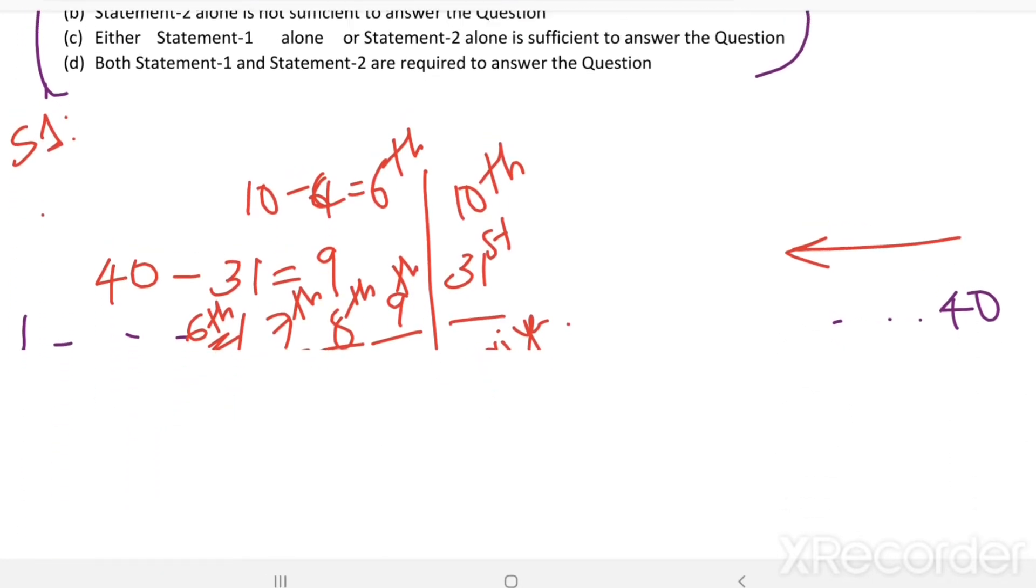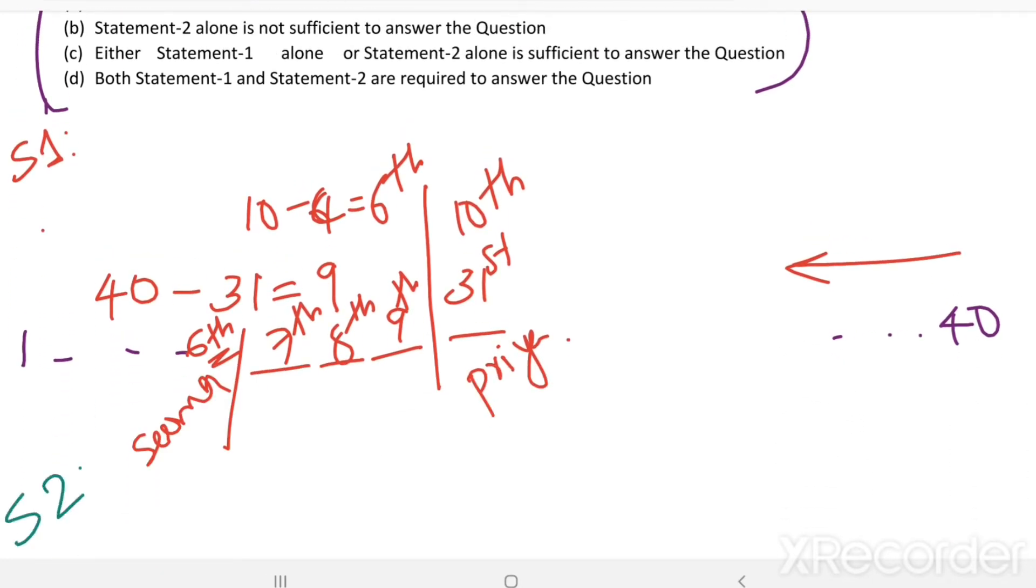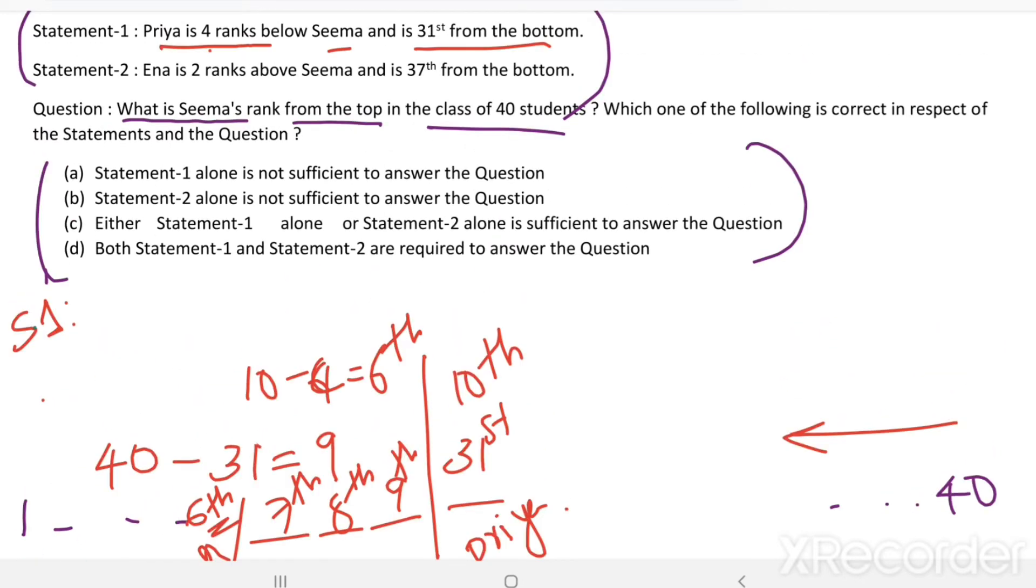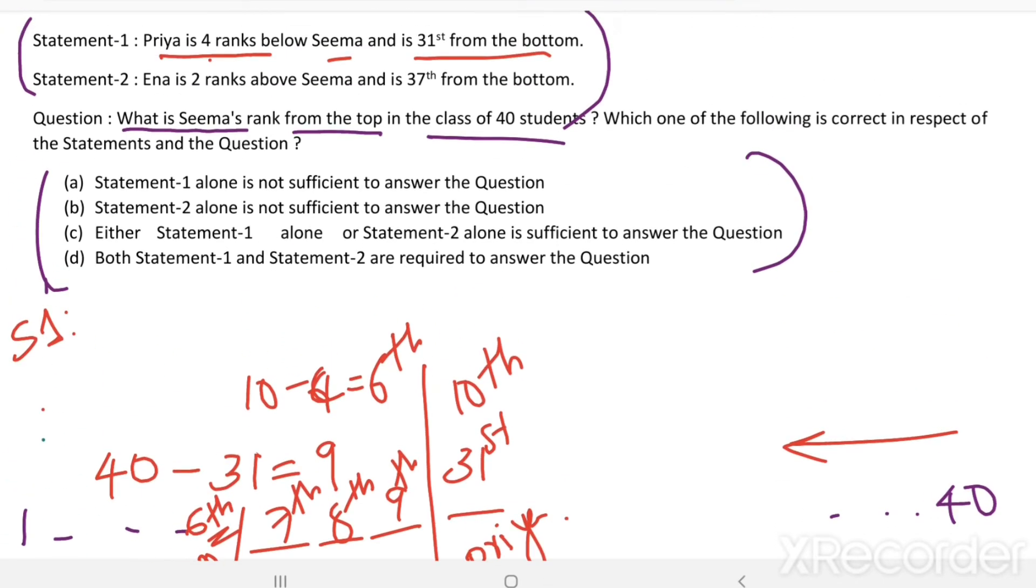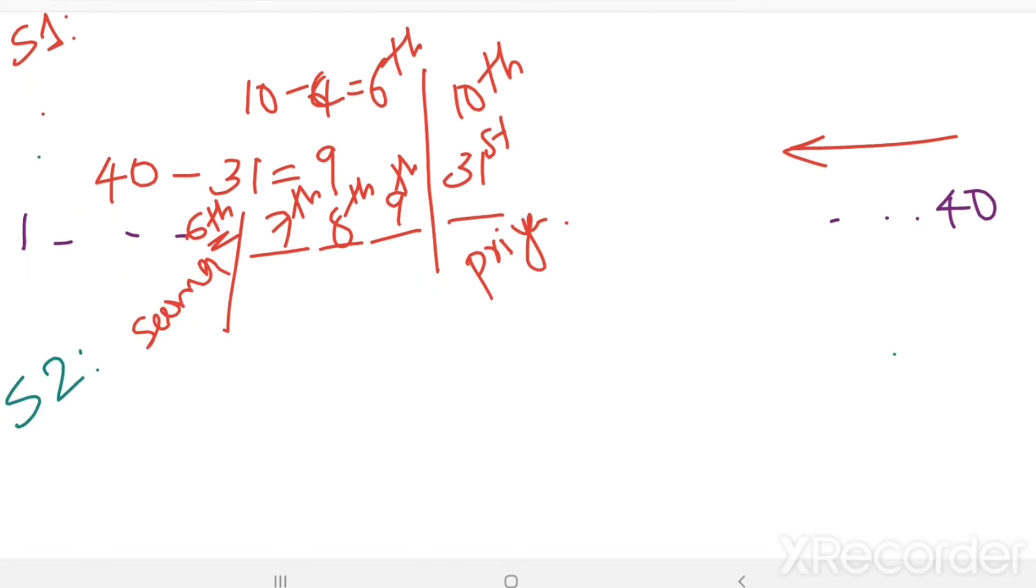Now see the second statement, statement 2. Inna is 2 ranks above SEMA and is 37th from the bottom. Inna is 37th from the bottom. From this side, her rank is 37th. Inna's rank is 37th. Then 40 minus 37 equals 3. There are 3 students in front of her from the top. Then Inna's rank from the top equals 4th.